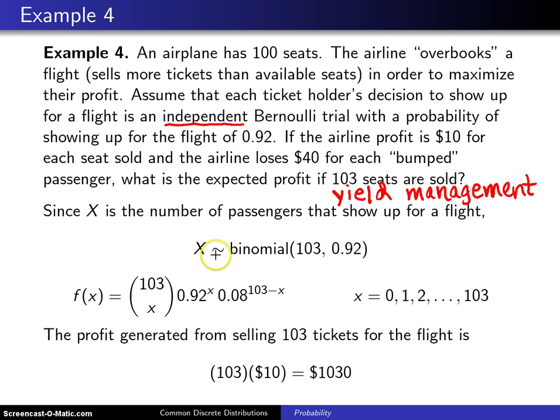So the actual number that shows up is going to be binomial with parameters 103 and 0.92. That corresponds to a probability mass function of n choose x times p to the x, 1 minus p to the n minus x, and that's for x equals 0 through 103.